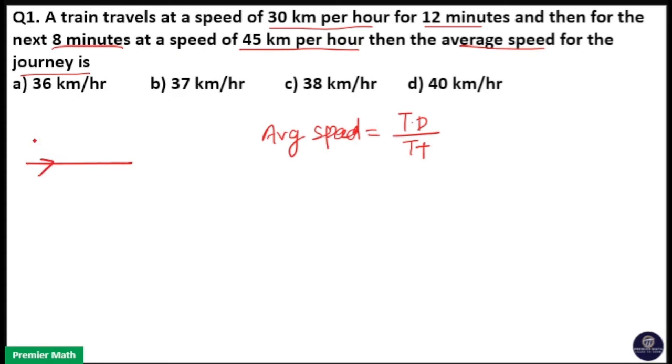Here a train travels at a speed of 30 km per hour for 12 minutes, and then 45 km per hour speed for 8 minutes. So we need to find out the average speed of this entire journey.